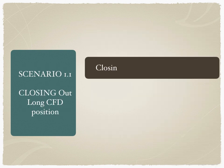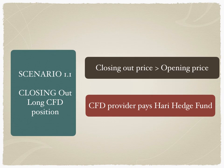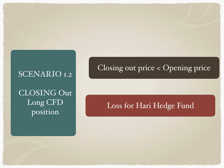In scenario 1.1, the hedge fund decides to close out the long position and at the time of closing out, the closing price is greater than the opening price. In this case, the hedge fund has earned profits. The profit is calculated and the CFD provider pays the hedge fund margin plus the profits. If the closing price is less than the opening price, it's a loss — the hedge fund gets back the margin minus financing costs minus the loss.